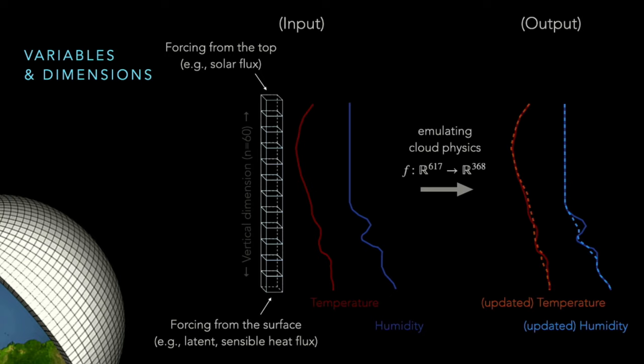Using these input variables, we want to predict the updated atmospheric state. You can directly predict the state itself, or an equally valid approach is to predict the tendency of these state variables. This illustration only includes a very small subset of the full ClimSim variables. If you include every variable we provide, the length of the concatenated input and output vectors will be 617 and 368, respectively.